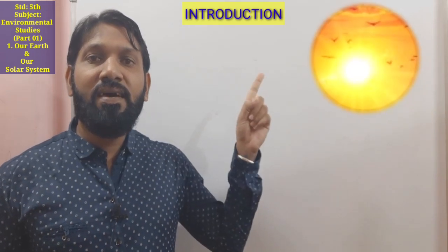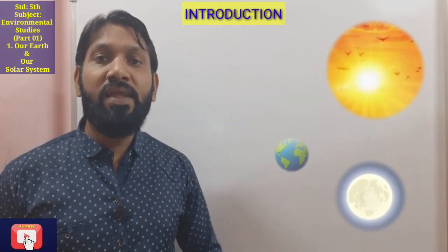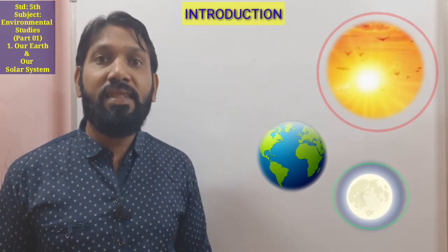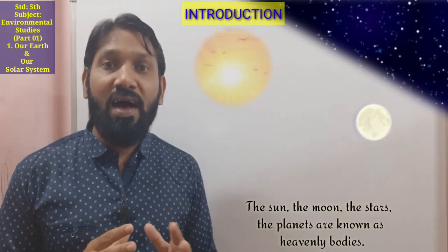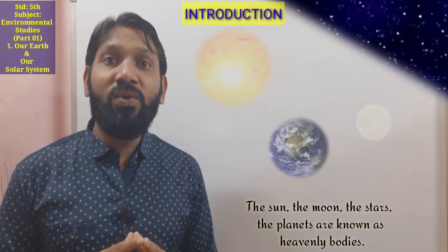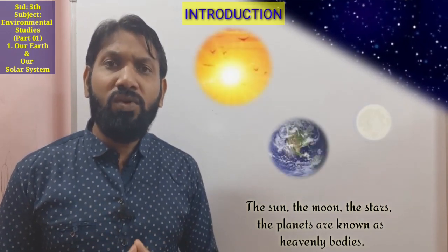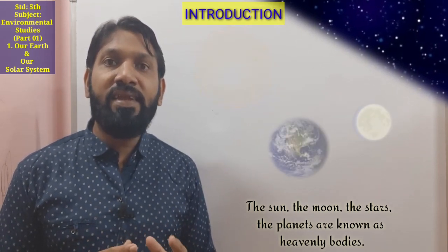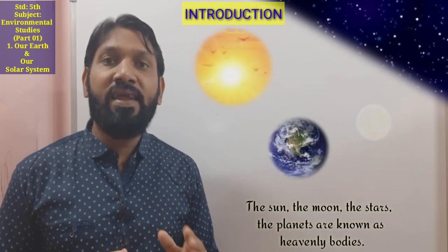If we look at the stars very carefully, some are twinkling and some are not. Some stars are prominent and some stars are tiny and faint. The sun and the moon are comparatively close to the earth, so we can see their round shape properly. The sun, the moon, the stars, and planets are known as the heavenly bodies.